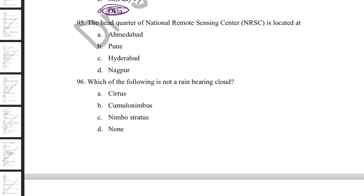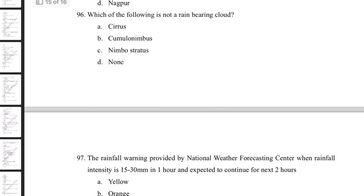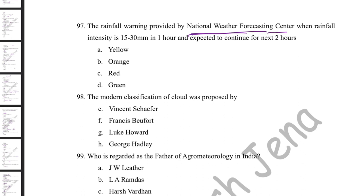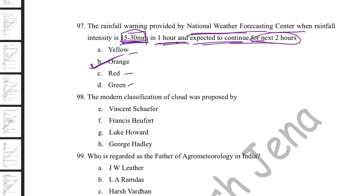Which is not a rain-bearing cloud? Wherever 'nimbus' appears in the name, it is rain-bearing — so cumulonimbus and nimbostratus are rain-bearing. Cirrus is the highest cloud and is not a rain-bearing cloud. An orange warning is issued when rainfall intensity is 15–33 mm in one hour and expected to continue for the next two hours. Beyond that is a red warning.